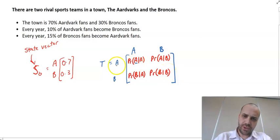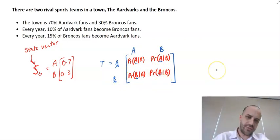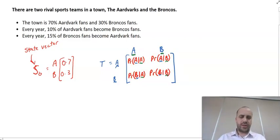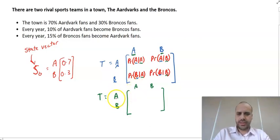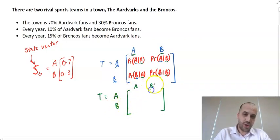The first letter of each entry corresponds to the column label, and the second letter corresponds to the row label. The way to interpret this: the probability that you will be an Aardvark fan given you were an Aardvark fan in the past; the probability that you will be an Aardvark fan given you were a Bronco fan in the past; the probability that you are now a Bronco fan given you were an Aardvark fan in the past; and the probability that you are a Bronco fan given you were a Bronco fan in the past.